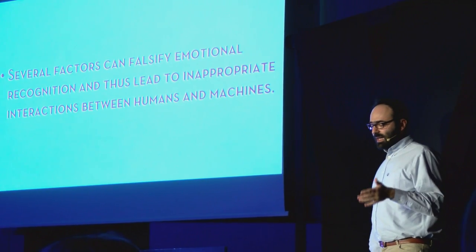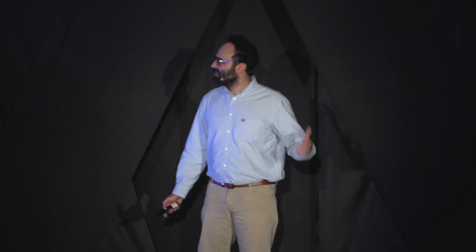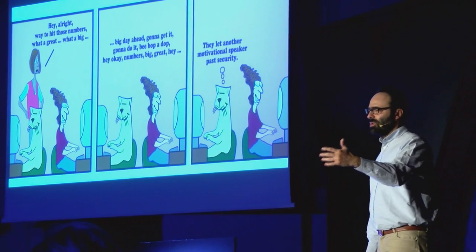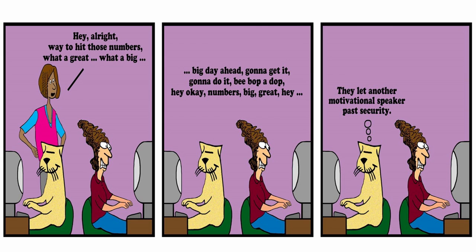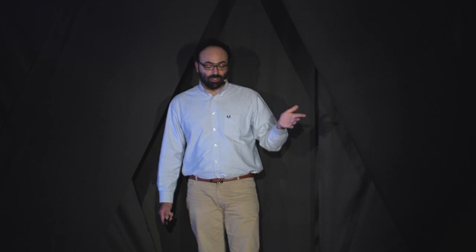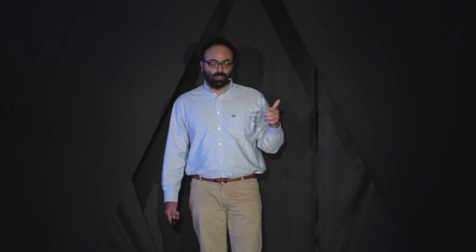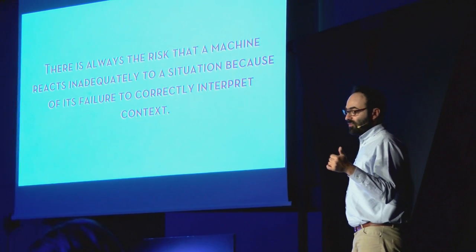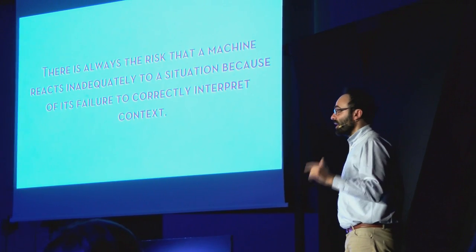For instance, if a robot is overly excited about a user's success, the user may feel awkward, which may lessen his or her motivation for continued interactions with the robot and on the task. But even if we manage to confront all these challenges concerning recognition of emotions, inappropriate interactions between humans and robots may still take place. There is always the risk that a machine reacts inadequately to a situation because of its failure to correctly interpret context.